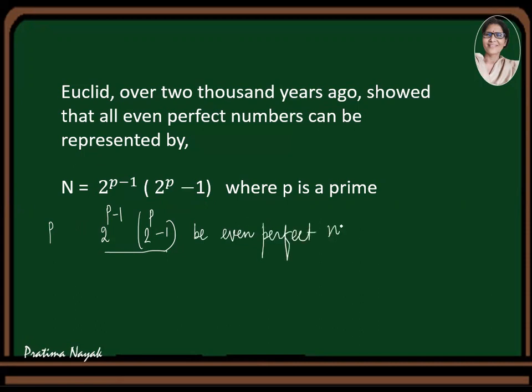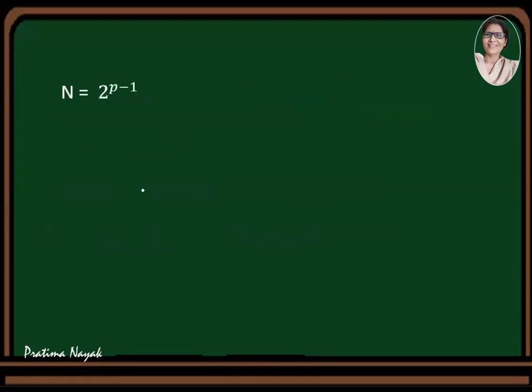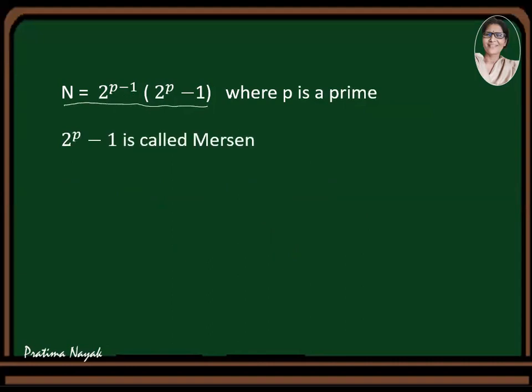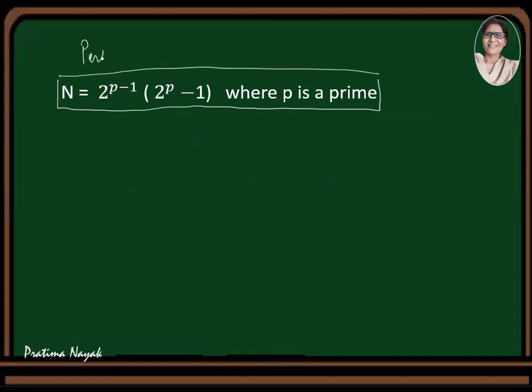So we can get perfect numbers starting from p is equal to 2, p equals 3, then p equals 4 cannot be possible because 4 is not a prime. Then p will be 5, and so on. So p will be 2, 3 because p should be a prime first, 3, 5, 7, and so on. So n is equal to, perfect number is 2 raised to the power p minus 1, times 2 to the power p minus 1, where p is a prime. And this number is again a prime number. It is called Mersenne prime. This is the definition of the perfect number, a perfect number we can get by using this formula.